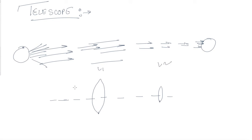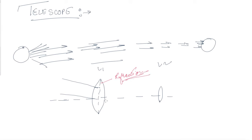Now the rays coming from infinity, after striking the lens, will undergo refraction. The light which is passing through the pole will continue passing through the pole and goes somewhere over here.